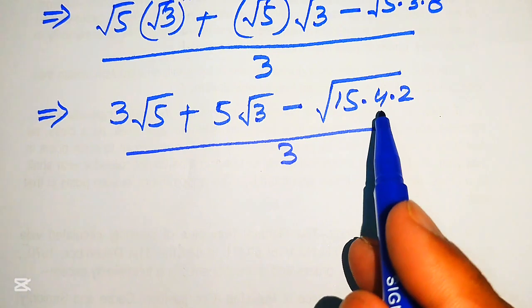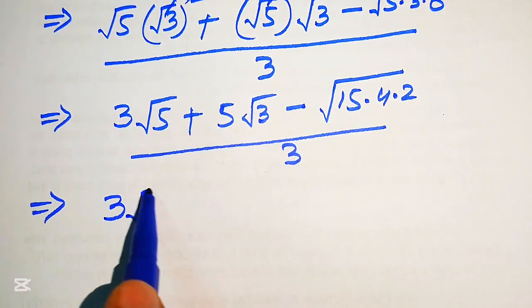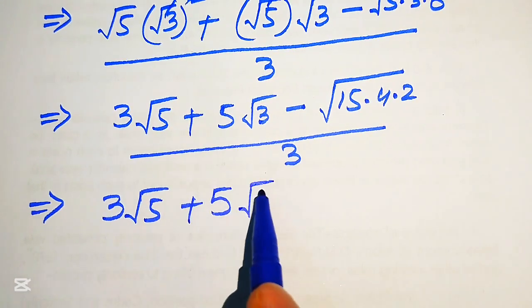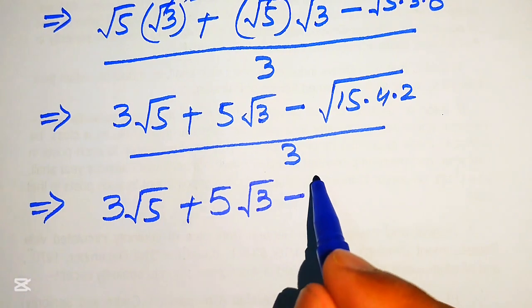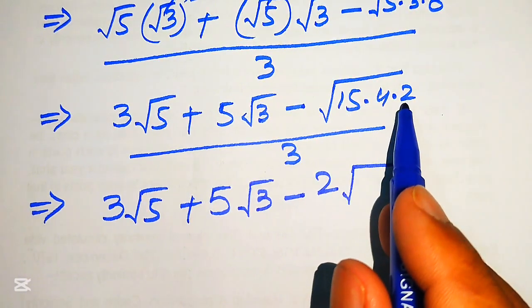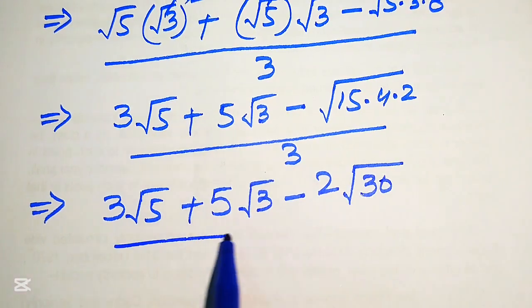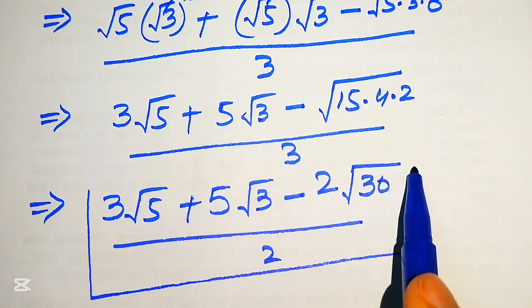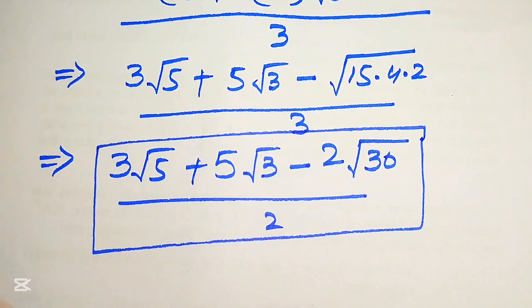So we get square root of 4 equals 2, giving us 3 times square root of 5 plus 5 times square root of 3 minus 2 times square root of 15, where 15 times 2 equals 30, divided by 3. This is our final simplified form of the given expression. Thank you so much for watching this video — please subscribe to my channel for more exciting videos.